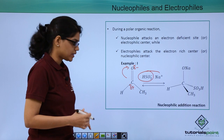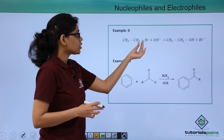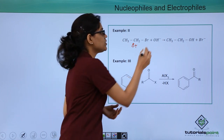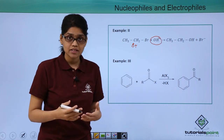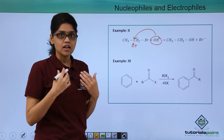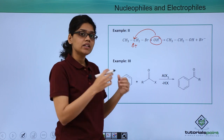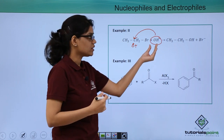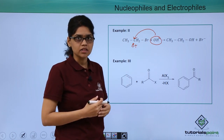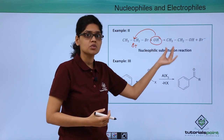Let us discuss another type of reaction in which a nucleophile participates. Here we have an alkyl halide RX system; because bromine is electronegative, a partial positive charge is developed on the carbon. The negatively charged species OH⁻ acts as a nucleophile and attacks this electron-deficient carbon, resulting in the final products CH₃CH₂OH and Br⁻. Here the nucleophile is substituting bromine from the RX system rather than adding to it, making this an example of a nucleophilic substitution reaction.